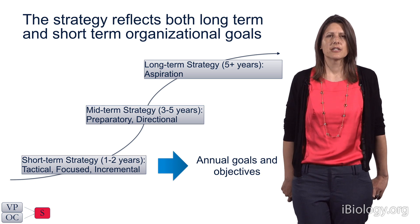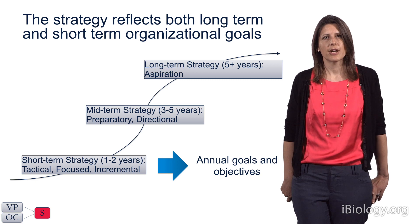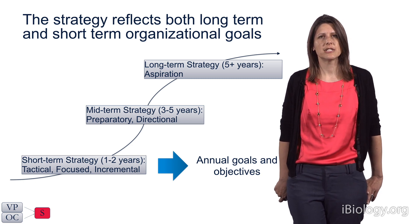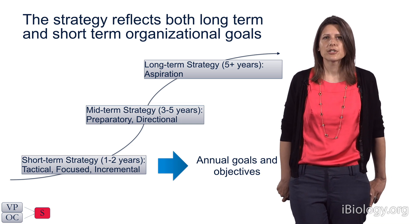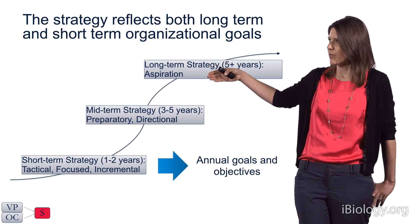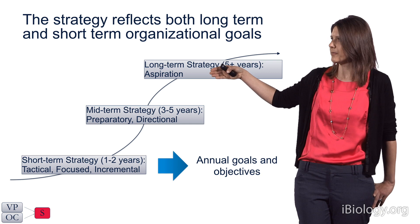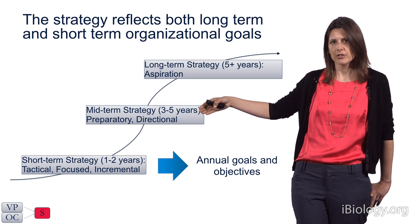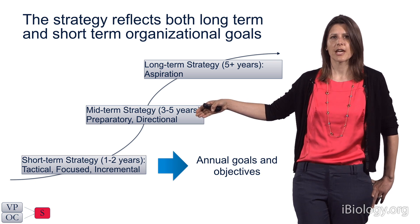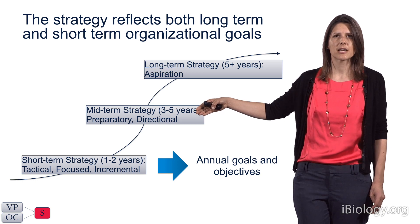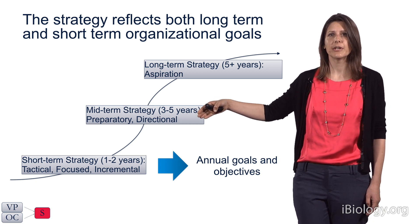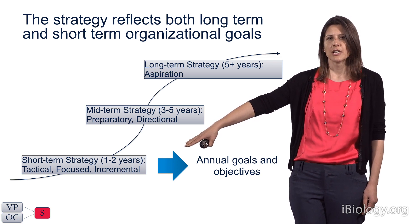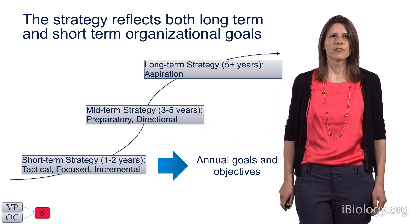The strategy is really the milestones and the map of how an enterprise is going to reach its long-term goals. We can break strategy into three sections. Long-term strategy, out further than five years, is very aspirational — this is where the enterprise wants to go and what it wants to be. Mid-term strategy, focused on three to five years, is preparational and directional. An example might be adding an entire manufacturing group or capability to the organization and growing it over time. Short-term strategy covers the next one to two years and is extremely tactical, focused, and incremental.